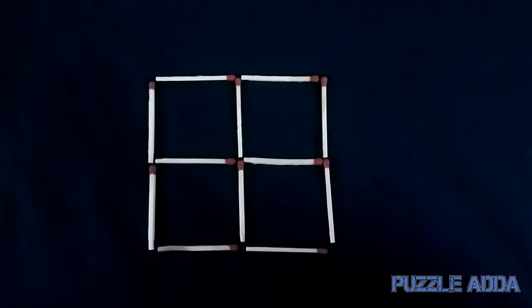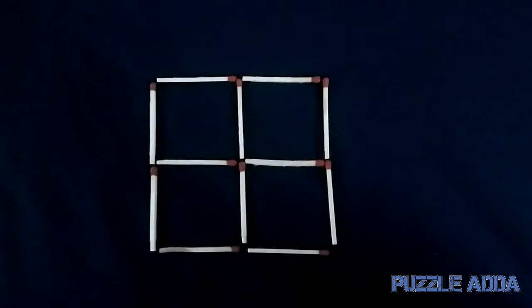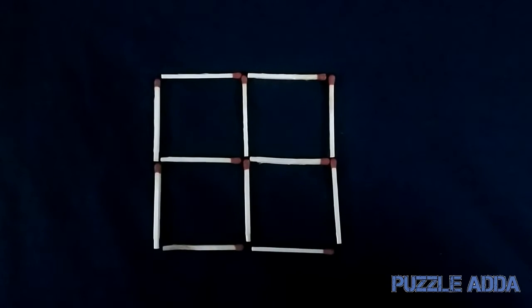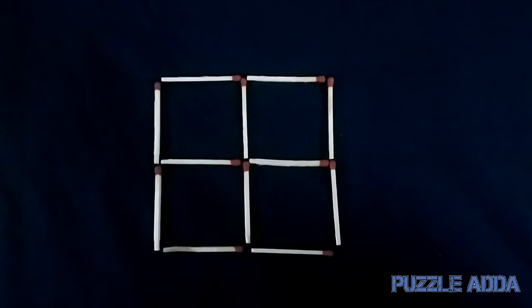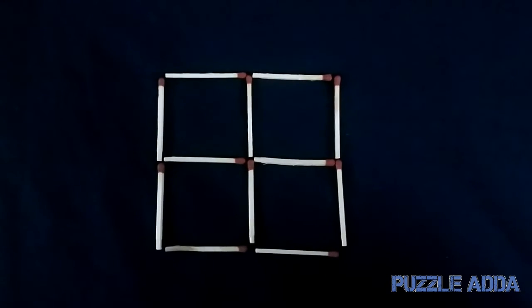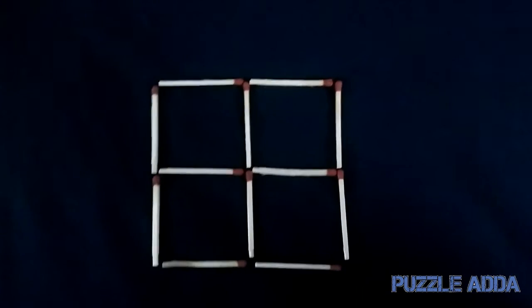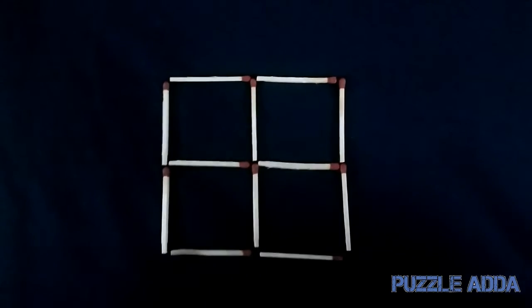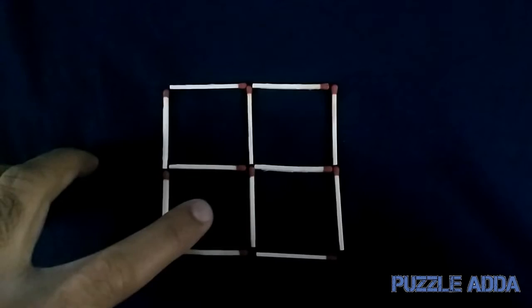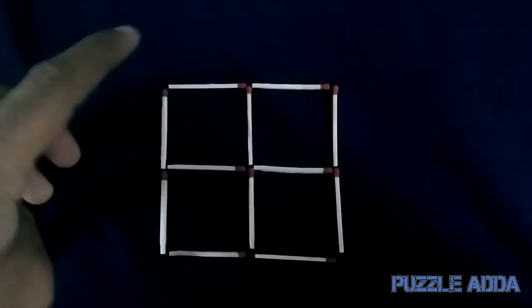You can move only three matchsticks to make three squares. Currently in this figure there are five squares: this one, one, two, three, four, and one at the outside, which makes five squares.